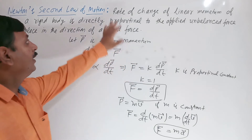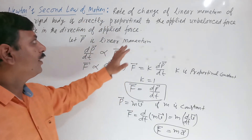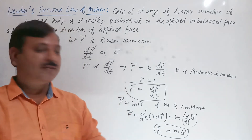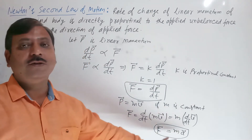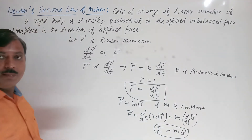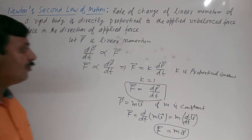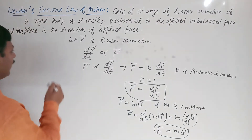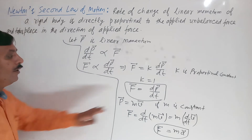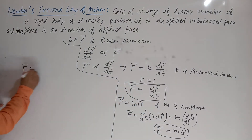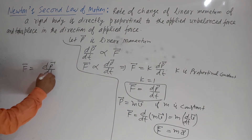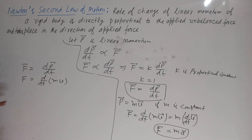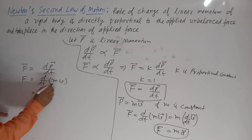The actual Newton's Second Law is rate of change of linear momentum is directly proportional to applied unbalanced force. When mass is constant, F = MA. But sometimes mass is not constant — for example, in the propulsion of a rocket, mass is not constant. In that case we use F = dp/dt = d/dt(mv).